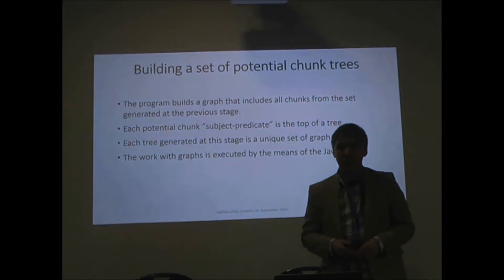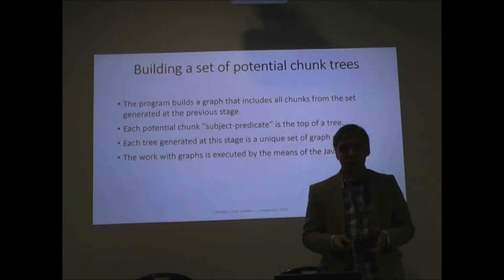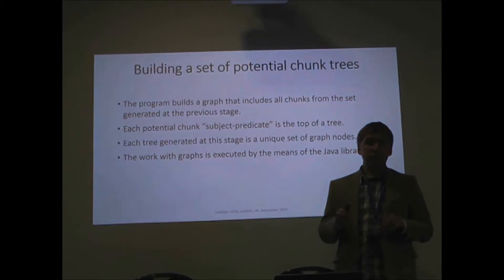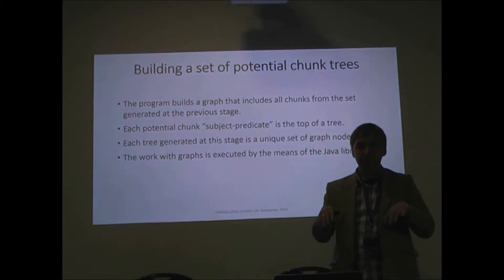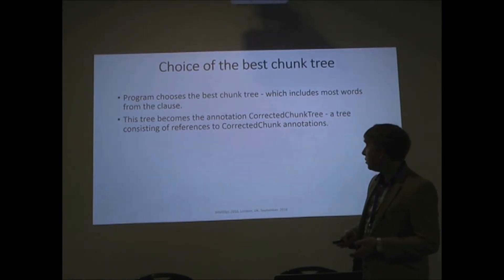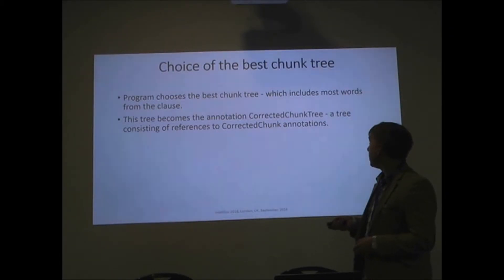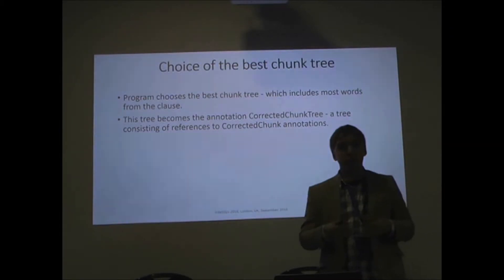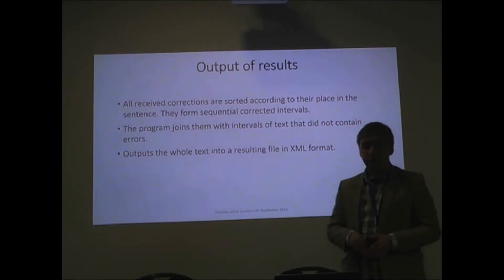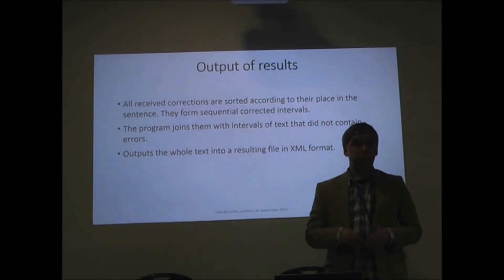Next we can at last build a set of potential chunk trees. First we build a graph of chunks. Next we put the subject-predicate pairs on the top of the trees and receive a forest of such trees. After that we need to choose one of these trees — we consider the best one to be the biggest one, the tree which includes the most words from the clause. After that we get output results in any form we want.